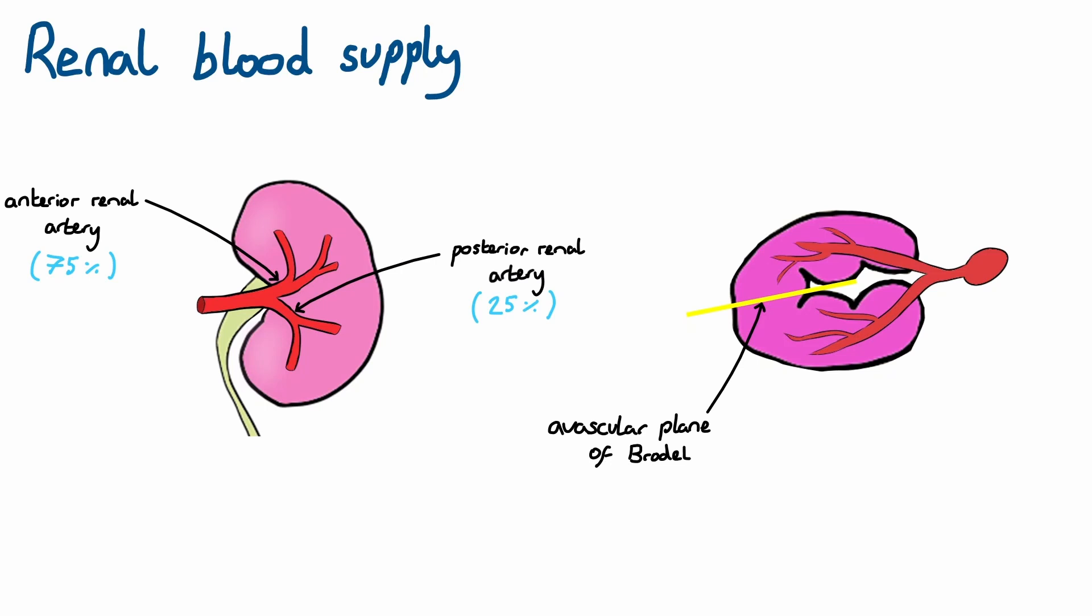It's found slightly posterior to the lateral edge of the kidney, and is relatively avascular. This makes it a useful anatomical landmark to aim for in procedures such as nephrostomy insertion.